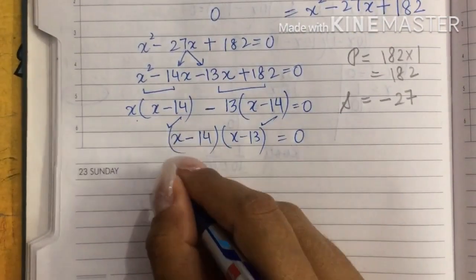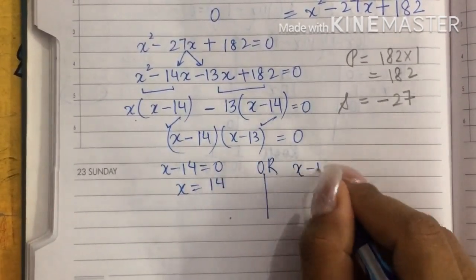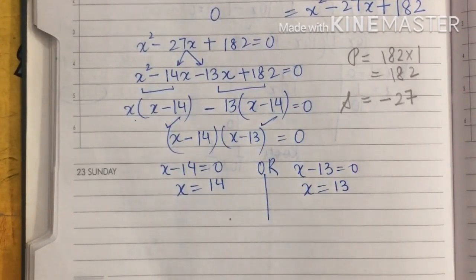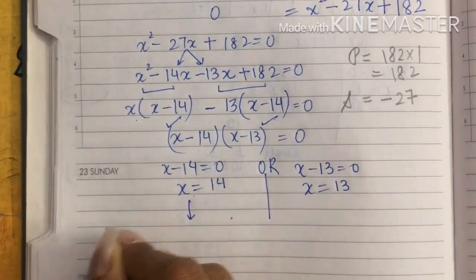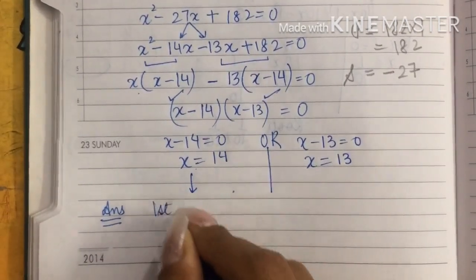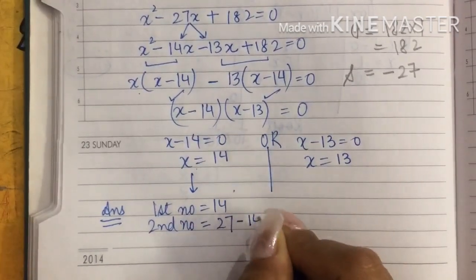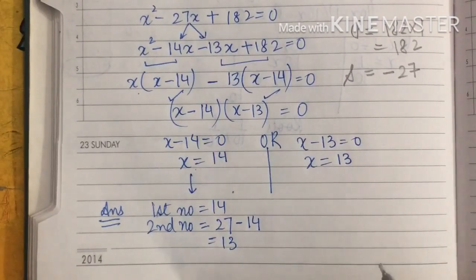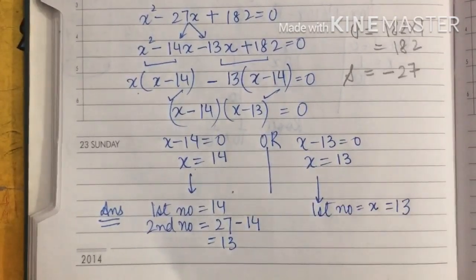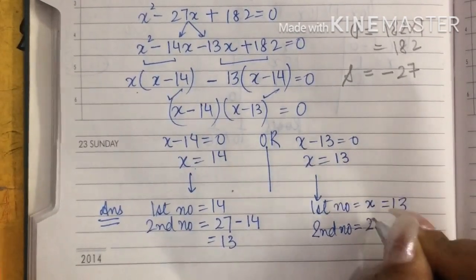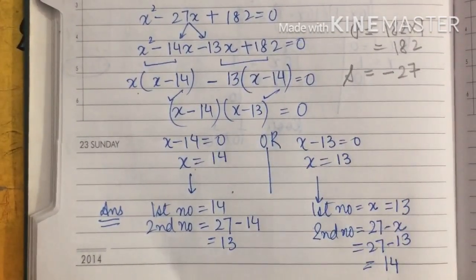Take each linear factor equal to 0. So x minus 14 equals 0 gives x equals 14, and x minus 13 equals 0 gives x equals 13. There are two answers possible. If x is 14, the first number is 14 and the second number is 27 minus 14 equals 13. Or if x is 13, the first number is 13 and the second number is 27 minus 13 equals 14. So the two numbers are 13 and 14.